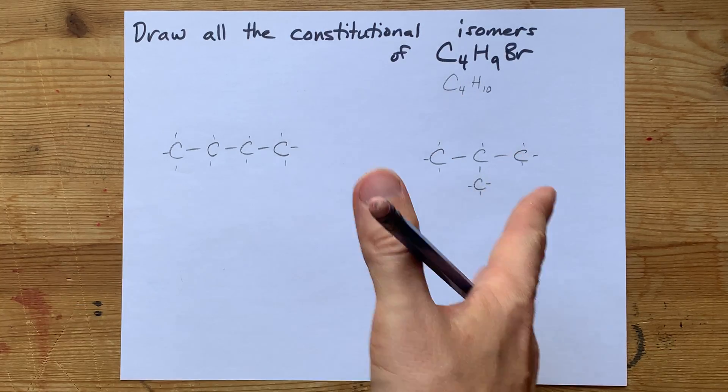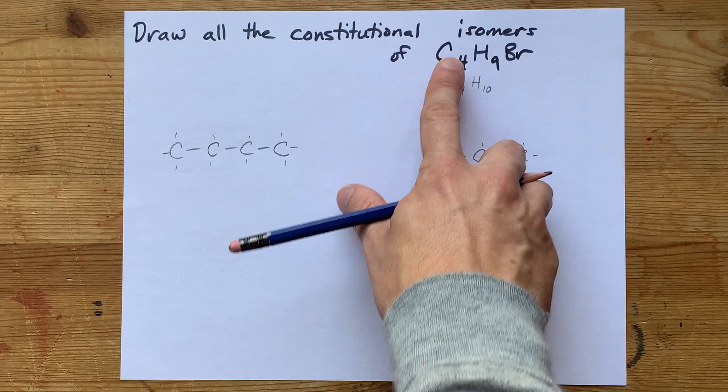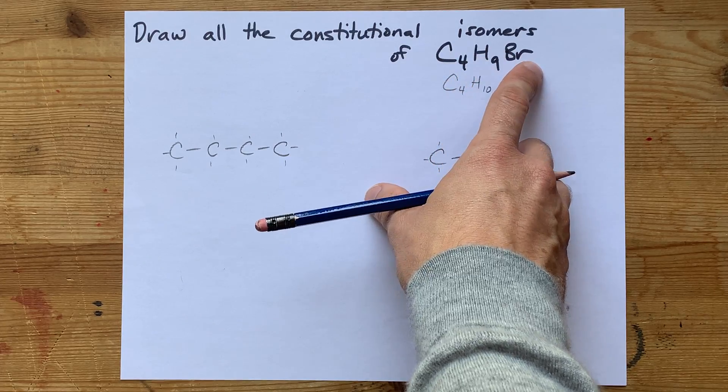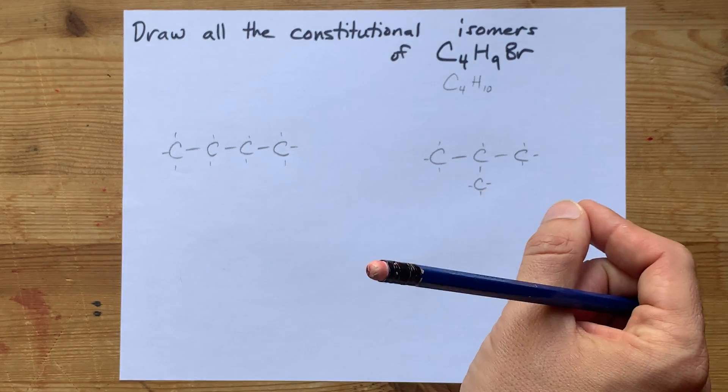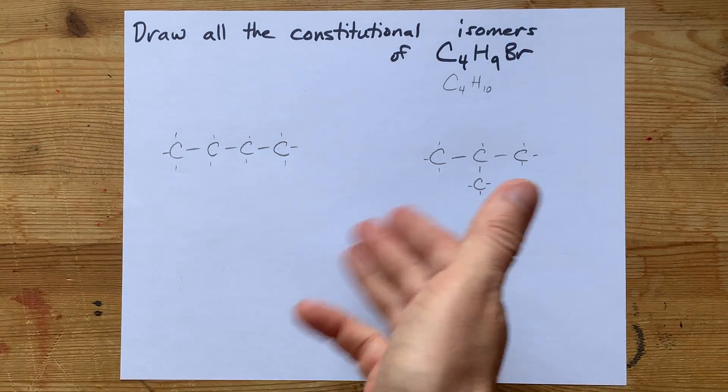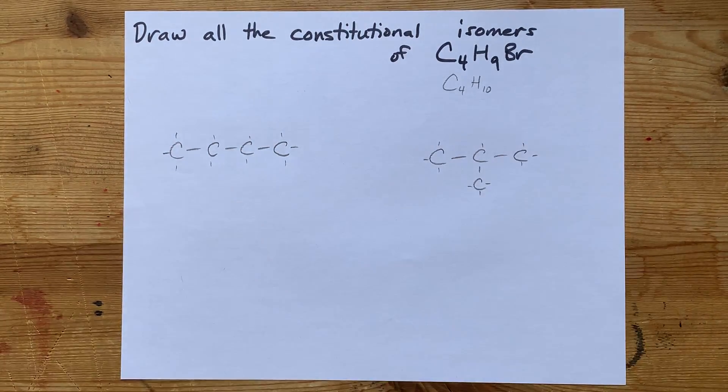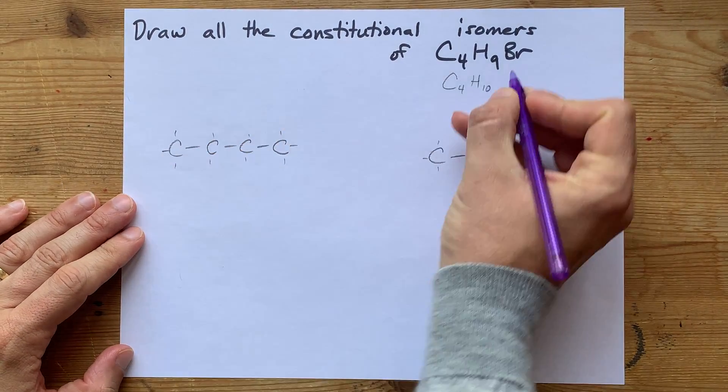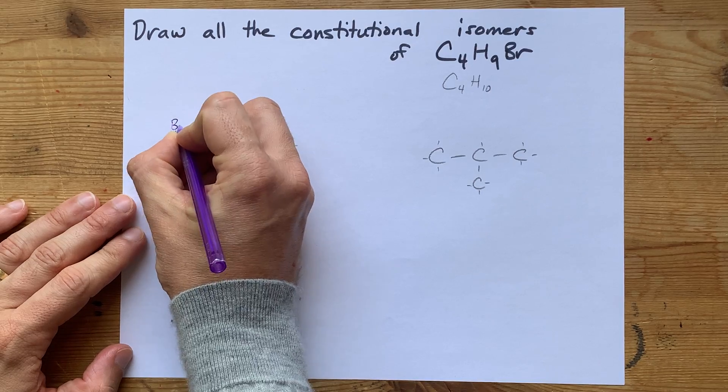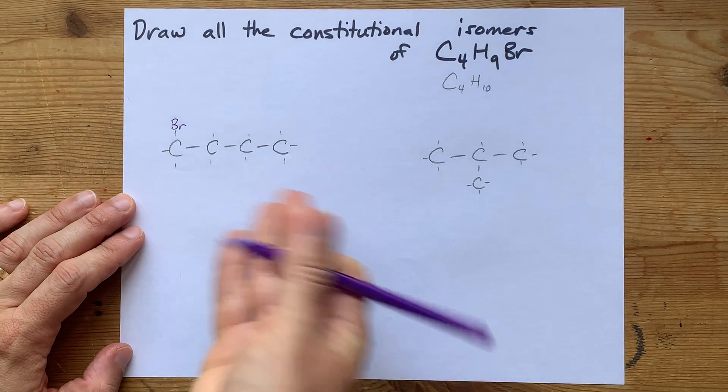And I'm going to generate the constitutional isomers of C4H9Br by just seeing where I can replace the hydrogen with bromine to see if that gives me a different molecule depending on where I do the replacement. So for this one, I'm going to start by putting a Br on the very first carbon. That was great. That's one.